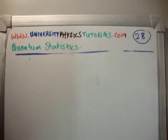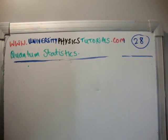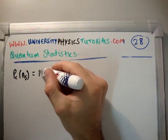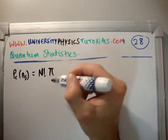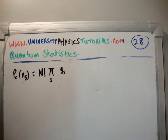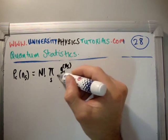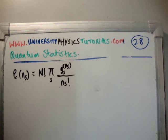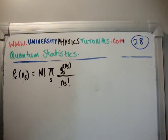In previous videos I calculated the multiplicity function for classical particles, where classical particles were distinguishable but non-interacting. The probability, classical, as a function of n sub s — which is the number of particles in each macro box — was equal to the total number of particles factorial, and we had the multiplication over s of the density of states of each macro box to the power of n sub s, divided by n sub s factorial. What we're trying to do here is maximize this, because if this occupancy function is maximized, then you have the most probable distribution.